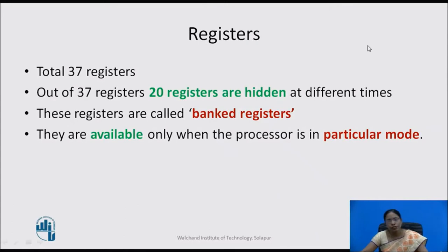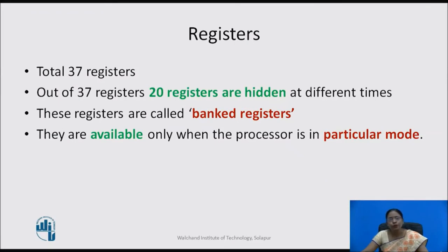Coming back to the registers: in active mode there are only 16 registers active along with CPSR. When the mode changes, the number of registers will vary. If we count all registers across all modes, the total comes to 37. Out of these 37 registers, 20 registers are hidden at different times, and these are called banked registers.